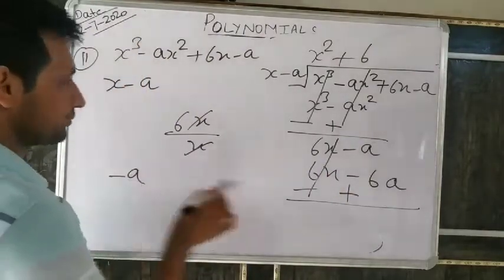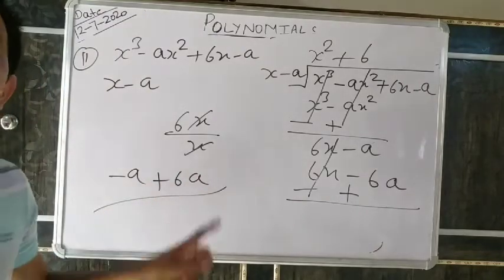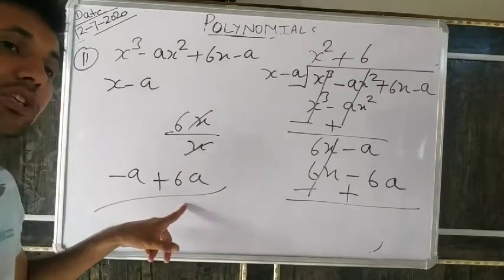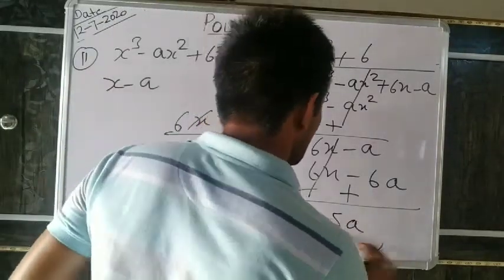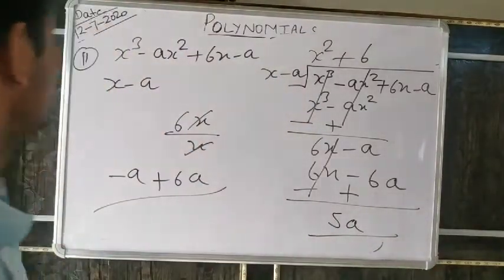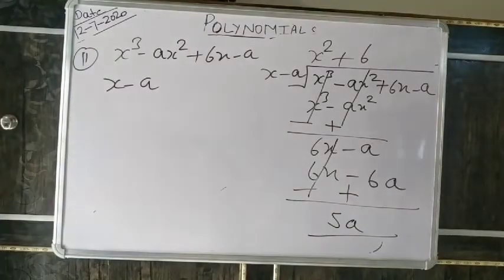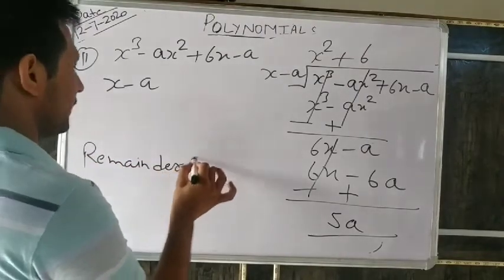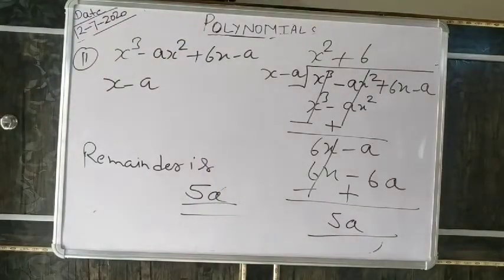6x divided by x gives 6. Write +6. Multiply 6 by (x−a): 6x − 6a. Change sign: positive 6x minus 6x equals zero. Minus a plus 6a: a and 6a are like terms, one negative and one positive — 6 minus 1 equals 5. So 5a remains. The remainder when x³−ax²+6x−a is divided by x−a is 5a. Remainder is 5a.